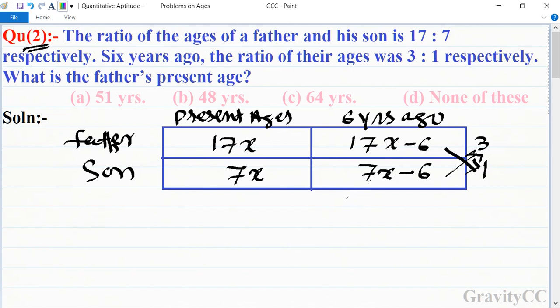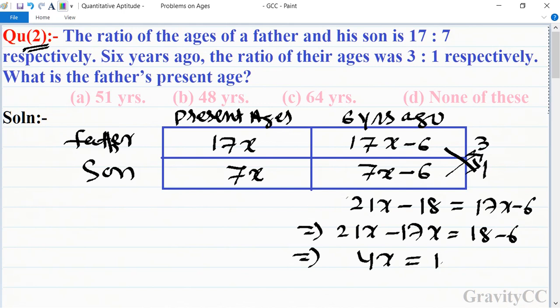So 21x minus 17x is equal to 18 minus 6. 4x equals 12. Therefore x equals 3. So what is the father's present age? 17 times 3.